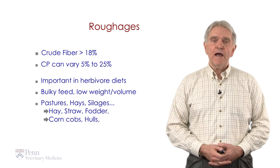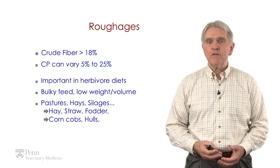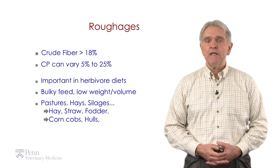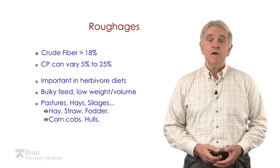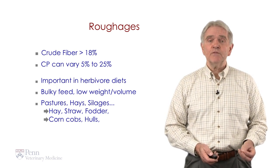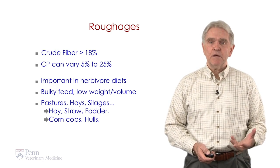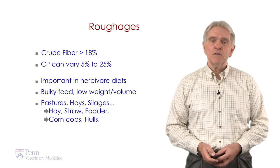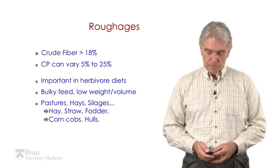Within that, we have hays, we have straws, we have fodder, which would be a residue after processing — removing the grain. We also have corn cobs. After you shell the kernels of corn, we can feed the cobs. Or we have hulls, like peanut hulls. After you shell the peanuts, we have the residue that can become a roughage source for animal diets.